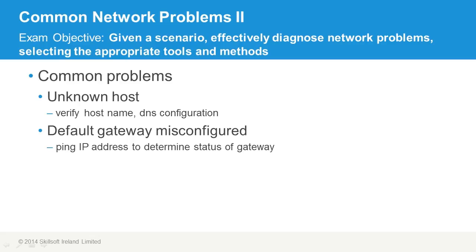If it's a default gateway misconfiguration, then just ping the IP address of the gateway to determine its status. If you aren't getting a reply from the gateway, then clearly there is an issue with it. You always need to be able to contact your default gateway to reach any system on the other side of your network. The default gateway is always the means by which you leave your network and get to any other one, including the internet. Simply ping the IP address of the gateway to verify you're getting a response and make sure it's configured correctly.